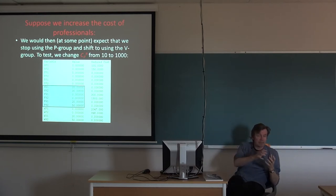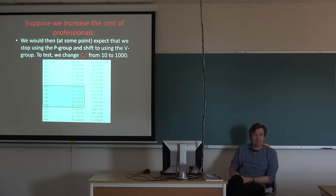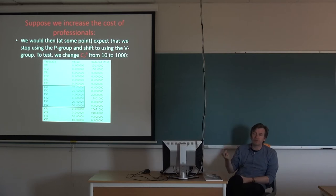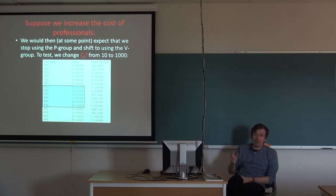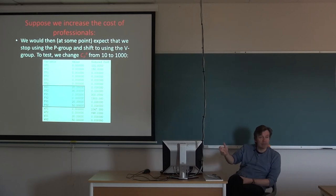We see the solution we expect: cheap professionals means we use professionals; expensive professionals means we use volunteers. But we don't see the mixed solution observed in reality where you have both. The reason is that this model doesn't have demands specific to each group — that certain people must produce certain items. If you need some professionals to do professional work, they would have to be included alongside volunteers. In that sense, this model is far too simple — it's a toy model, but it lays out a way of continuing this work scientifically.